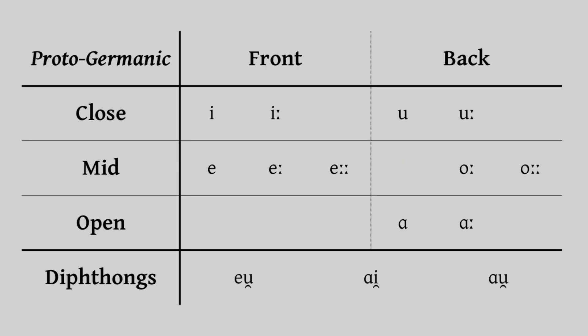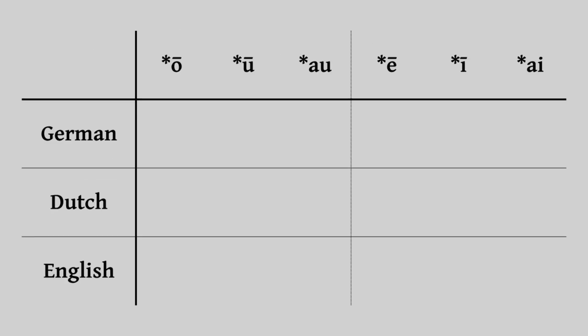Our six vowels are the long back vowels OR and OO, the long front vowels E and Ē, and diphthongs A and I. These three front-back pairs have behaved about the same as one another in all three of our languages. OO has generally behaved similarly to E, as has AO to I. The long vowel Ē is a bit of an exception, as the West Germanic languages all lowered it to A, so it diverges from OO here.